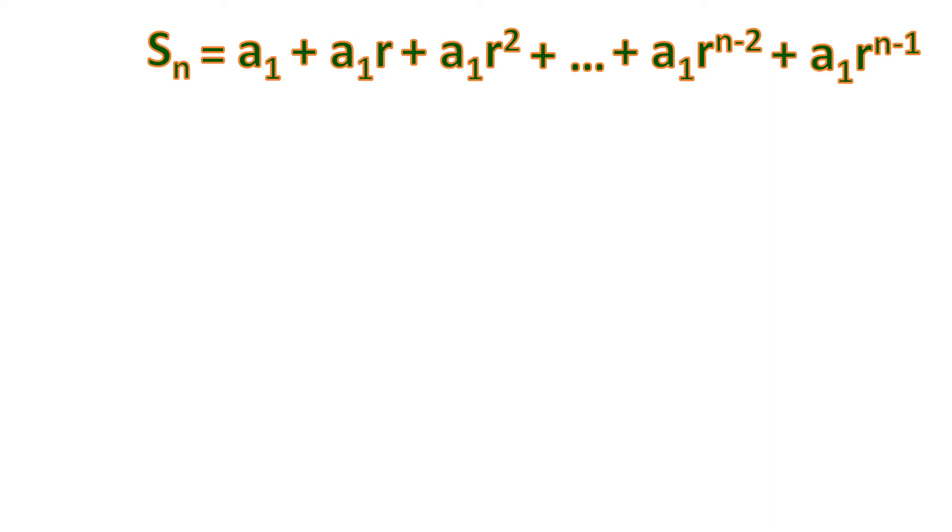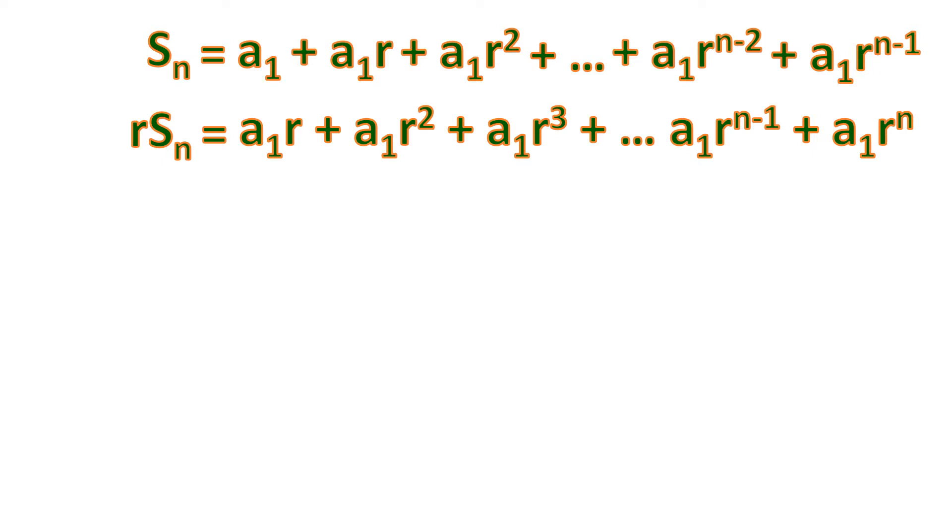Next, we multiply all terms by r. So r times S sub n equals a sub 1 times r, plus a sub 1 r squared, plus a sub 1 r cubed, and so on. The last term becomes a sub 1 r to the n instead of r to the n minus 1, because one factor of r is added.